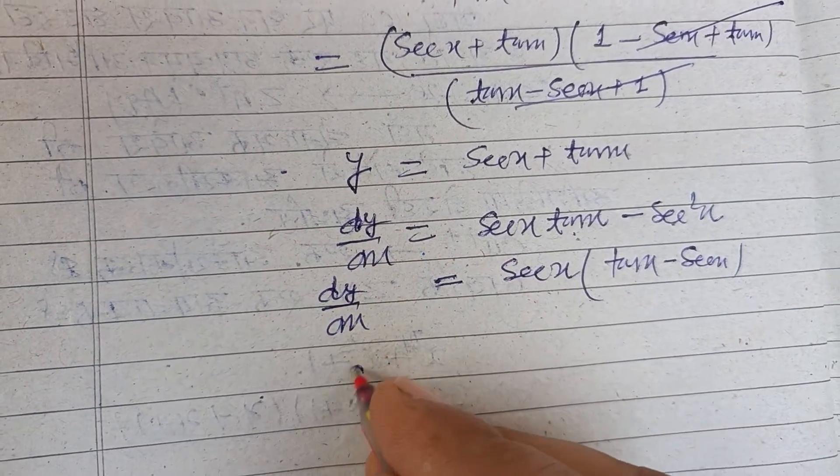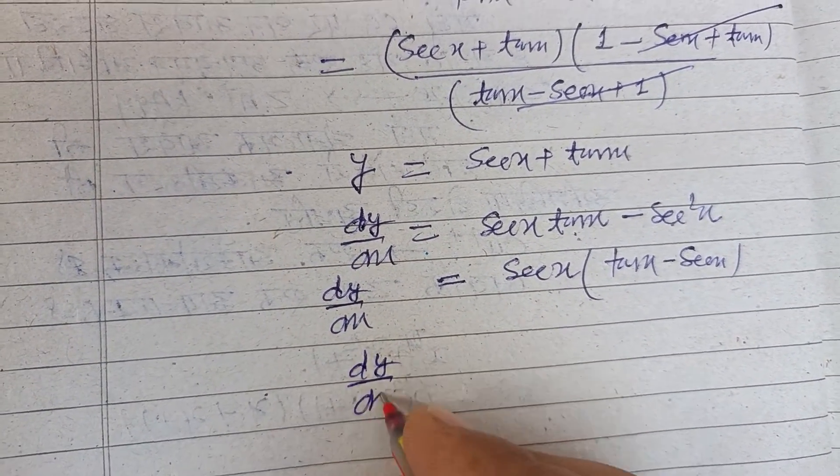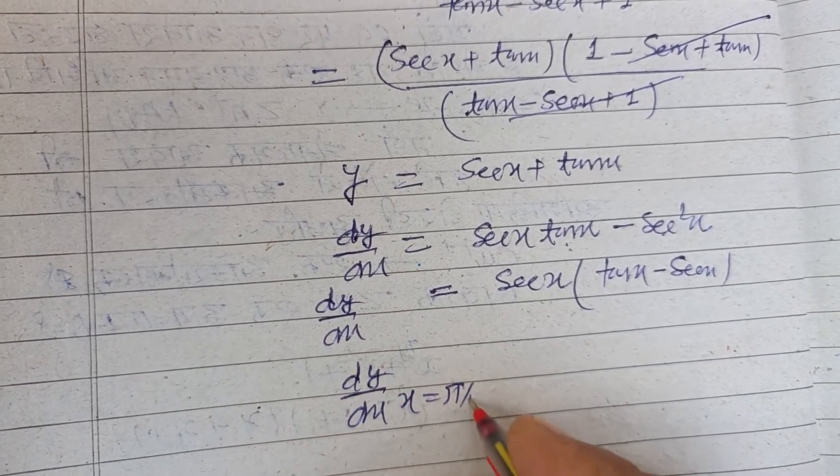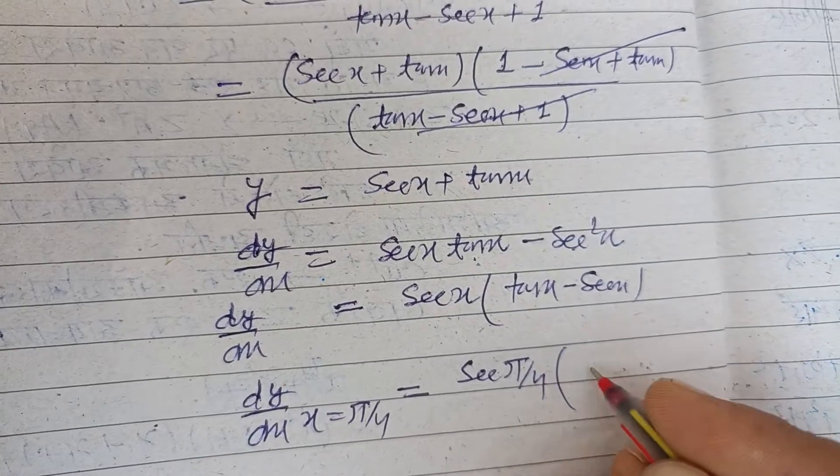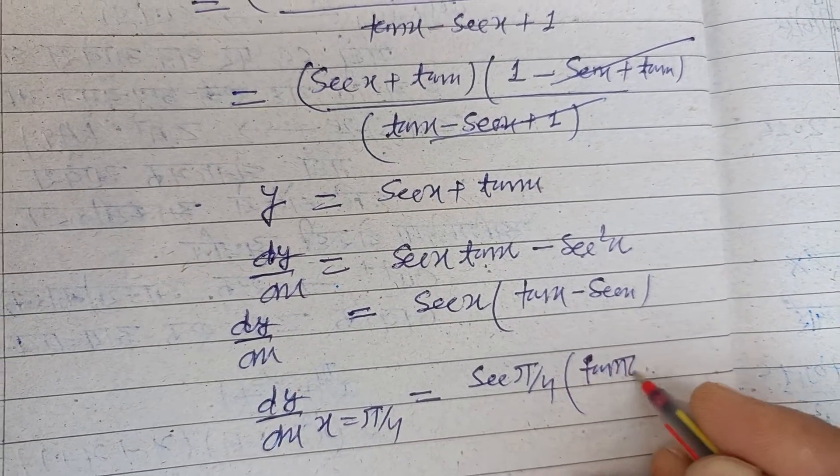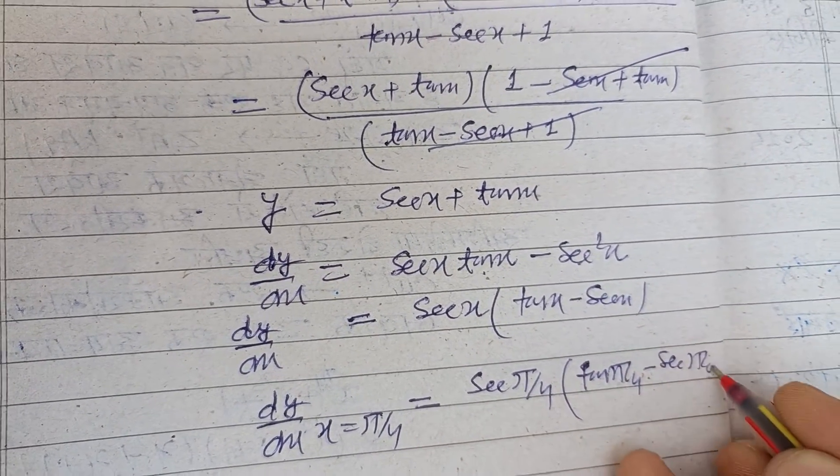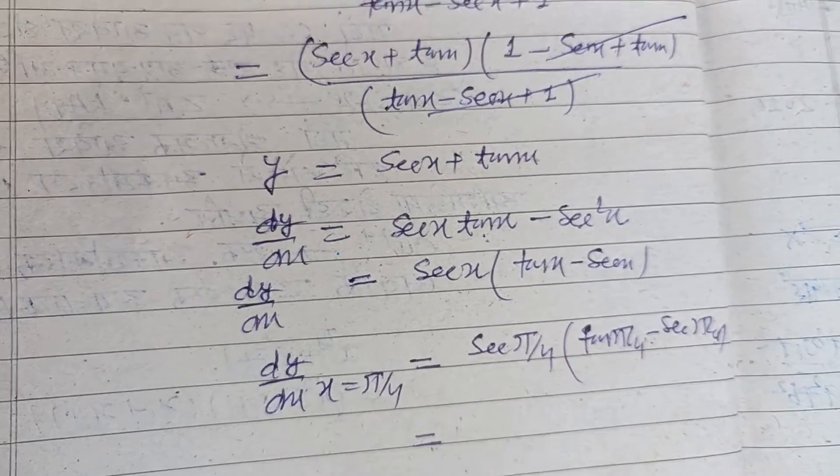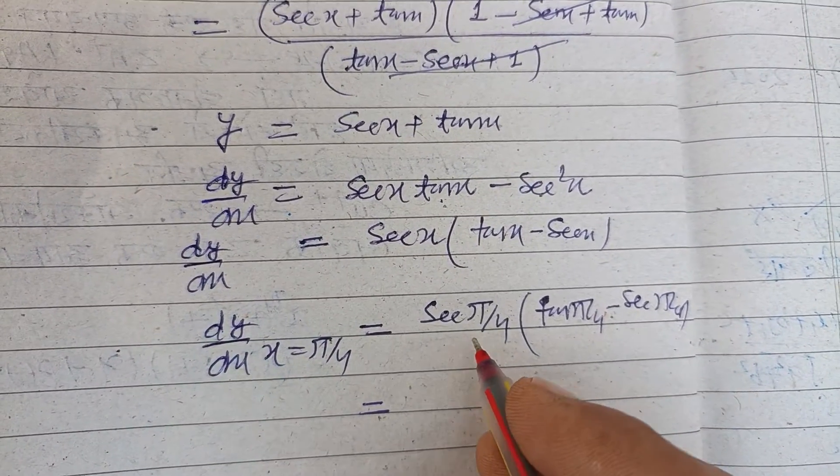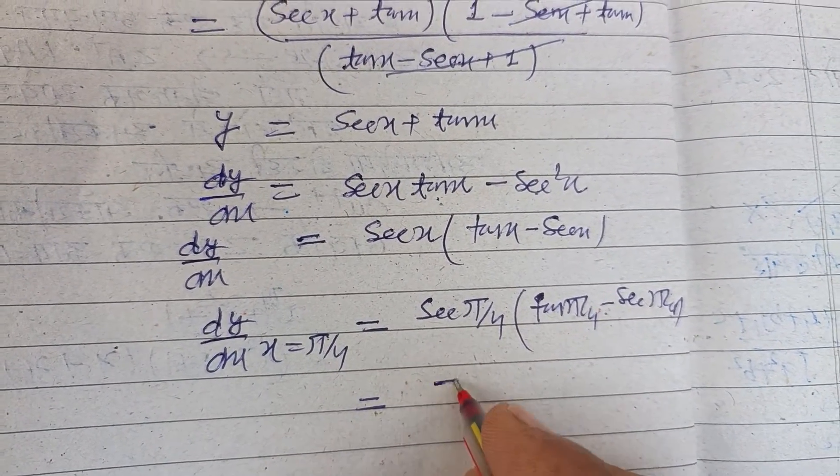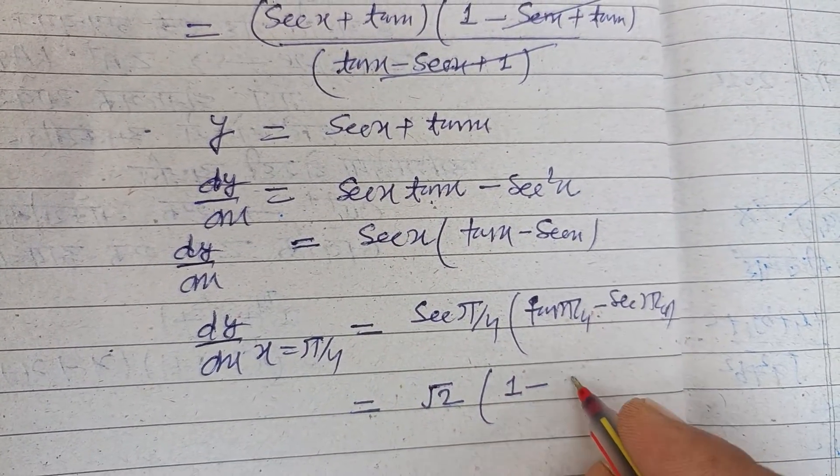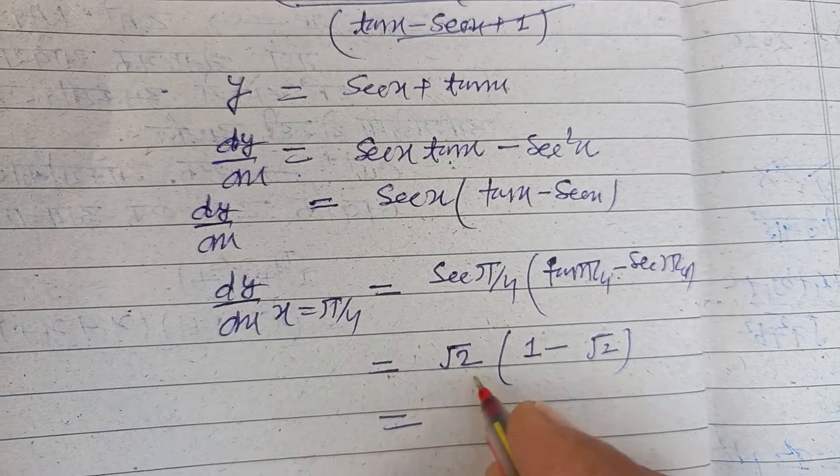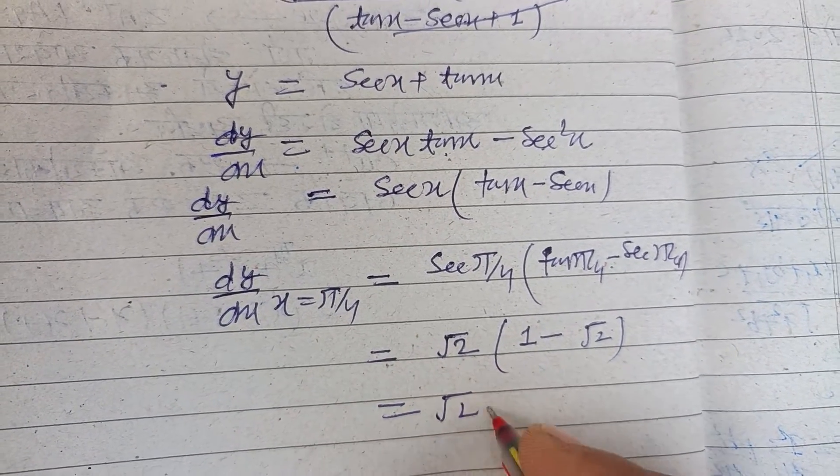Now putting x = π/4 in this: sec(π/4) times [tan(π/4) - sec(π/4)]. So sec(π/4) is √2, and tan(π/4) is 1, and sec(π/4) is √2.